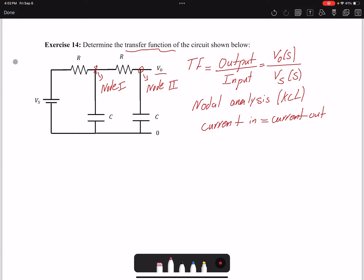So for node 1, we have a current coming in and currents going out here and here. For each of the currents, we have the voltage on each side.